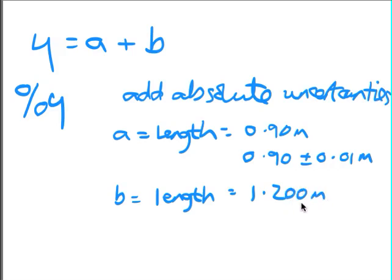the extra digit representing the increase in precision, then the absolute uncertainty in that measurement would be 1.200 plus or minus 0.001 metres.